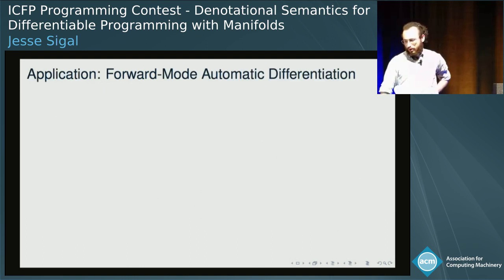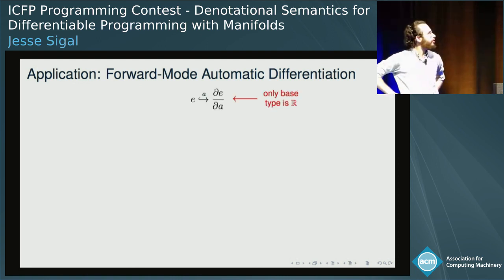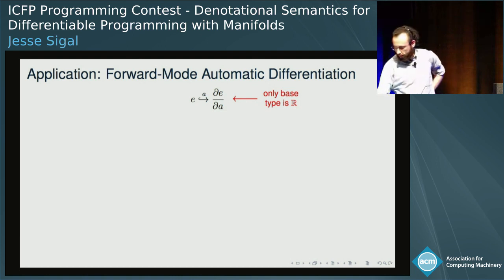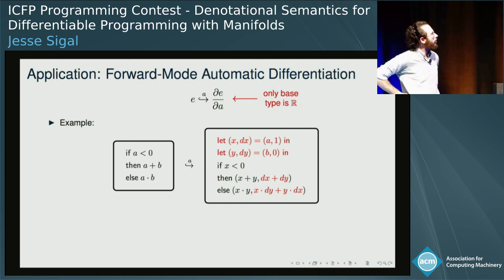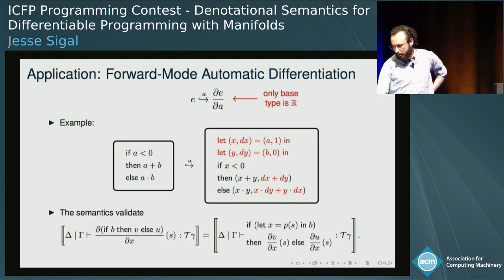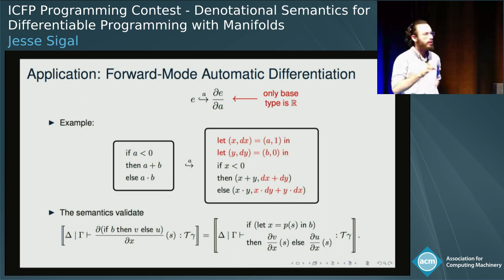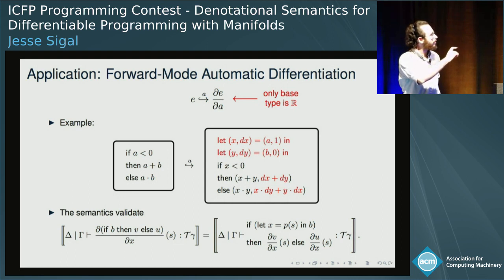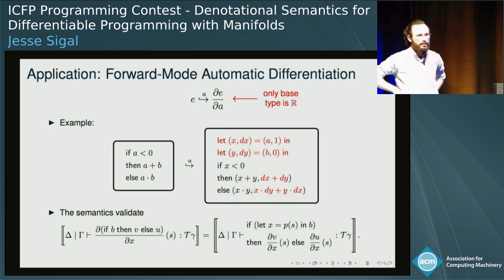Here's an application of the semantics. Forward mode automatic differentiation, which was discussed in Conal Elliott's talk, can be viewed as a program transformation — it differentiates with respect to a free variable, where the only base manifold types are R. In an example application, we can see in the branches that the derivative is being carried along with the actual value. We can use the semantics to justify this transformation by looking at semantic equivalence: reading left to right, the derivative construct can be viewed as translating the conditional, where the derivative is shoved down into the branches. The projection function p and the condition on the right-hand side correspond to the fact that we've dropped dx in the condition in the program.